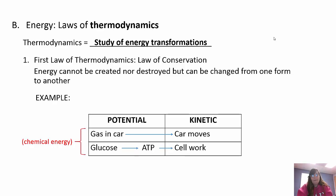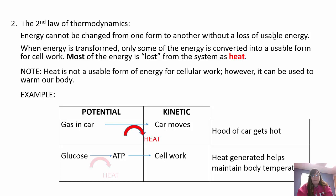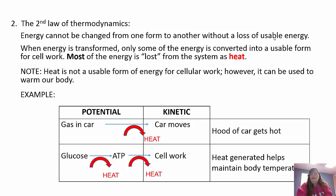The second law of thermodynamics states that energy cannot be changed from one form to another without losing energy. Most of that lost energy is in the form of heat. When energy is transformed, we can only keep some of it to use; the rest is lost as heat, and there's nothing we can do about it. Heat is not a usable form of energy, but it can help maintain our body temperature. The gas in a car transforms to kinetic energy and loses heat - you can feel the hot hood. Glucose transformed to ATP loses heat; ATP performing work loses heat, which helps maintain body temperature.